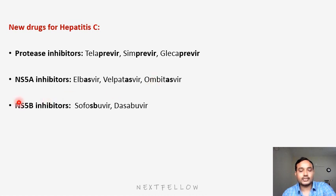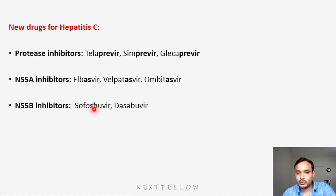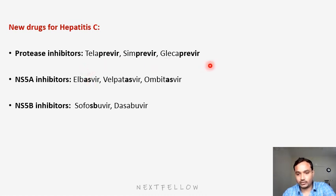NS5B inhibitors are sofosbuvir and dasabuvir — the name contains 'buvir', representing NS5B. So the mnemonic: protease inhibitors end in 'previr', NS5A inhibitors end in 'asvir', and NS5B inhibitors end in 'buvir'. These are recently developed drugs for hepatitis C, because in hepatitis C the virus needs to be completely eradicated from the body.